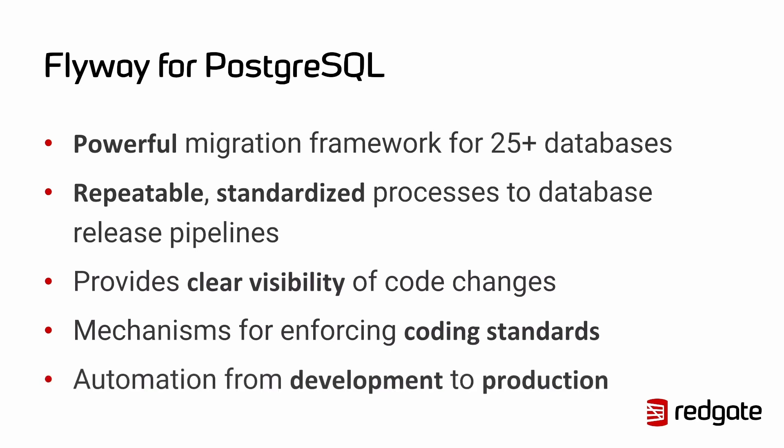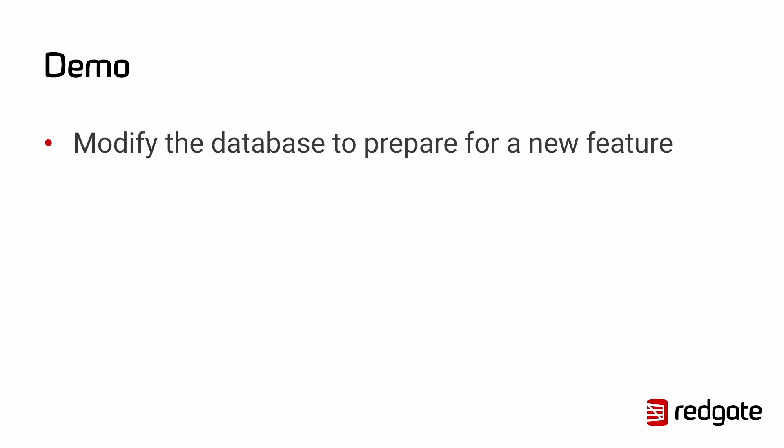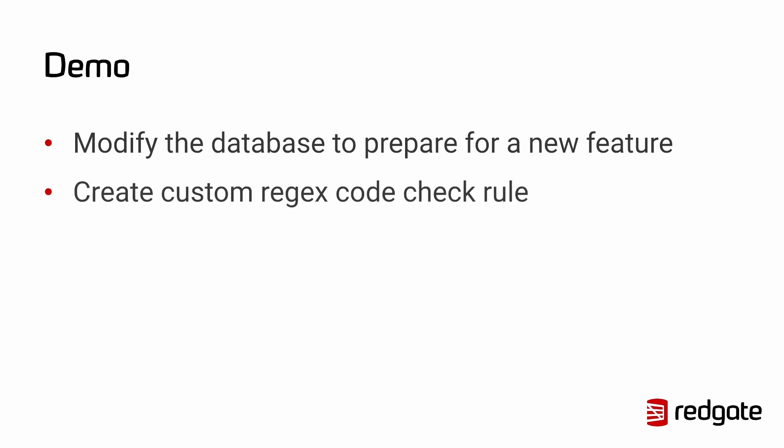All of this is provided so that you can begin to bring automation into your development pipeline at the database layer, from your development teams all the way through testing and into production. In today's demo, we're going to modify a database to prepare it for a new feature that the development team is working on. We're also going to create a new regular expression code check to make sure that our developers are naming tables correctly based on some agreements we've recently made.